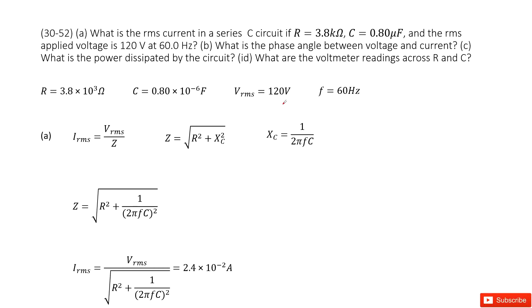Chapter 30 is about inductance, electromagnetic oscillations, and AC circuits. You can see we have the RC circuit, right? The quantity R and C are given. It also gives you root mean squared voltage, so we write it as Vrms equals 120 volts and the frequency 60 Hertz.